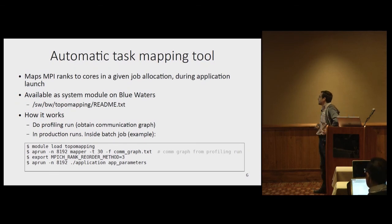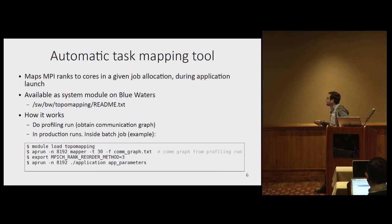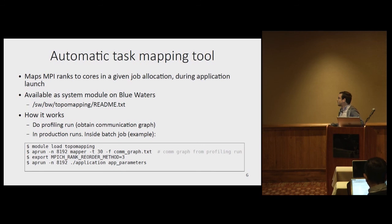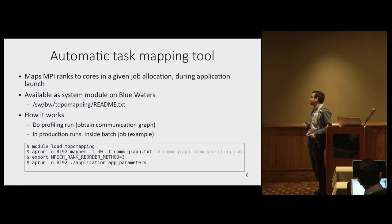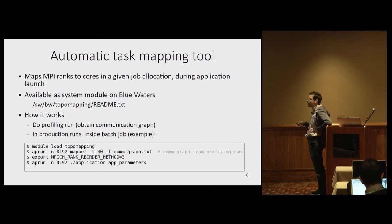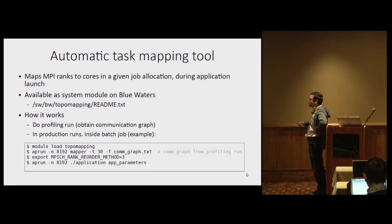We developed an automatic topology-aware mapping tool, which is available on Blue Waters. How it works: first you do a profiling run using the automatic tool, which obtains the communication graph of the application. Then in production runs, you load the module and run a program called Mapper, which takes the communication graph as input and generates a special mapping file. You export a variable, and when you launch the application, the system maps the MPI ranks according to the calculated mapping.